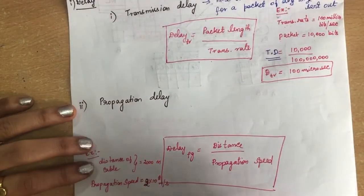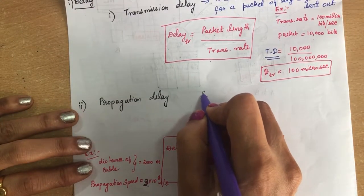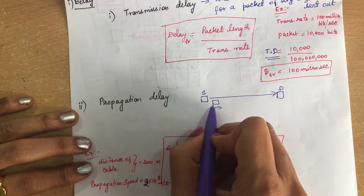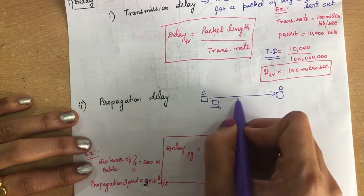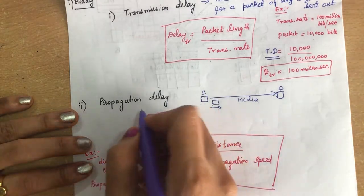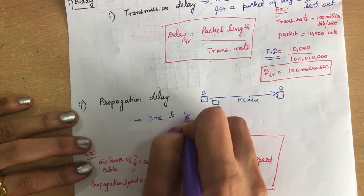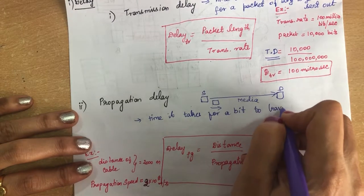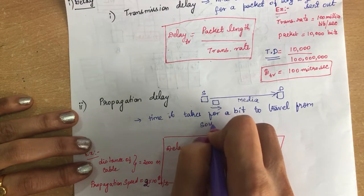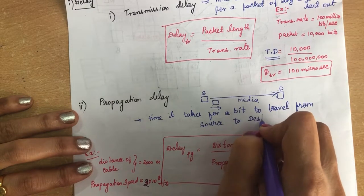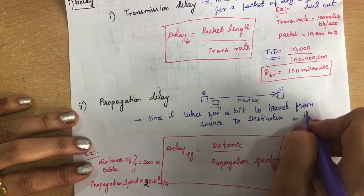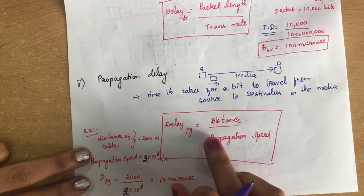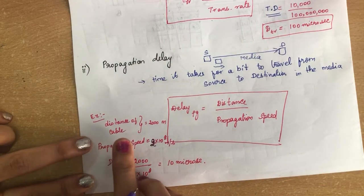Propagation delay is the time it requires for a bit to travel from the source to the destination inside the transmission media. You have a source and a destination, and the time it takes for a bit to travel from source to destination in the media is called propagation delay.